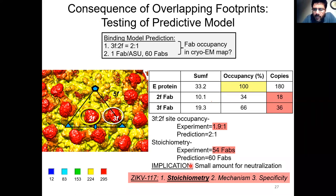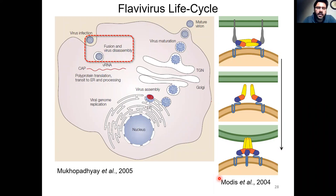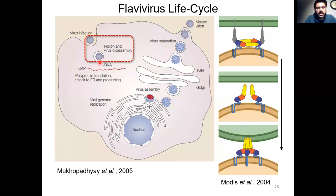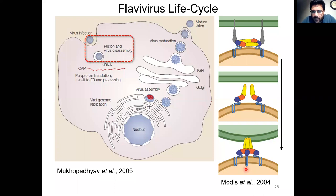A cryo-EM experiment was able to address the first of the three questions — what is the stoichiometry of binding of the antibody to the viral surface? Now let's move on to the second question: what is the mechanism by which the antibody neutralizes infections? As I mentioned, flavivirus particles enter host cells by receptor-mediated endocytosis. Once inside the cells, the acidification of the endosome lumen triggers conformational changes in the viral surface that convert viral E-protein dimers into fusogenic trimers.